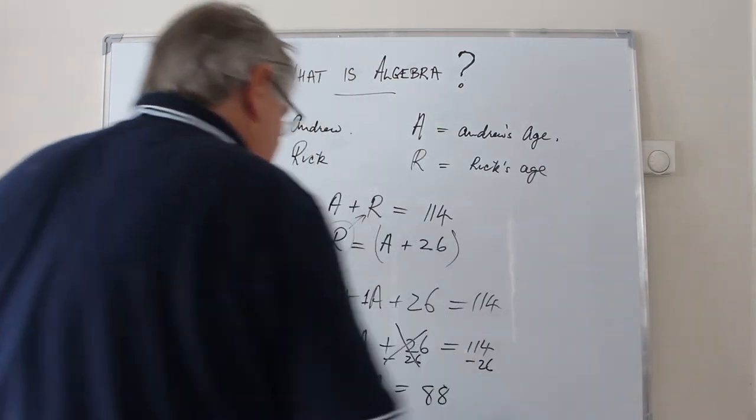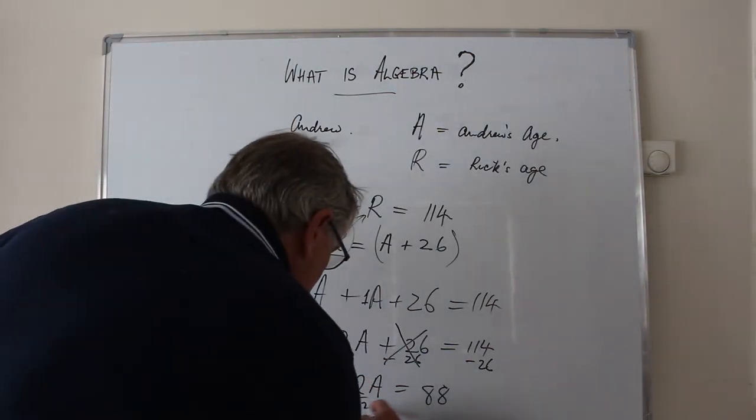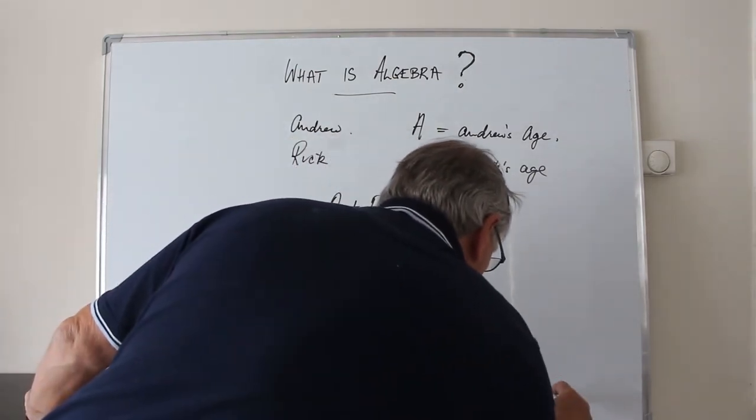3 for 11 is 8. 2 times Andrew's age is 88. Divide both sides by 2. And clearly, Andrew's age is 44.